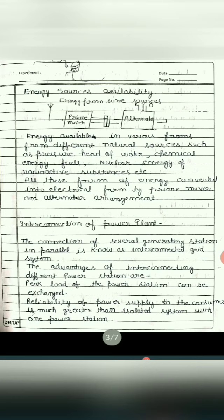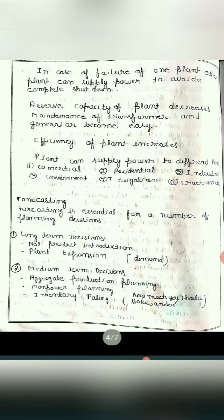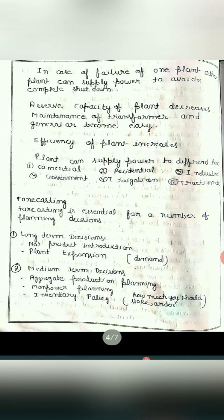Maintenance of all equipment is easy, because if one system fails then power supply is continuous from the other system, and we can check the fault in the failure system. Reserve capacity of power plant decreases. Efficiency of power plant increases. It can supply power for different loads such as commercial, residential, irrigation, industrial and traction systems. Now the second topic is forecasting.